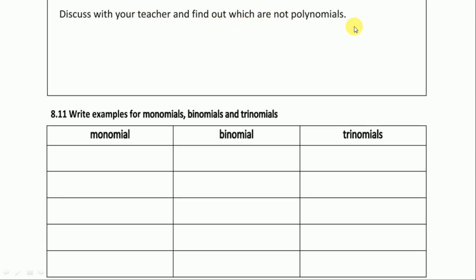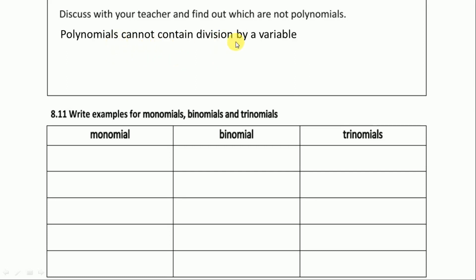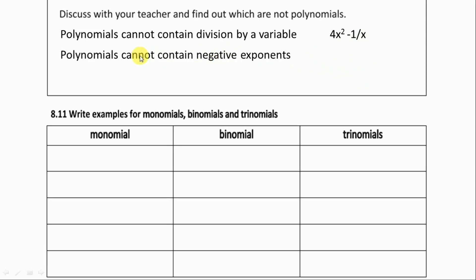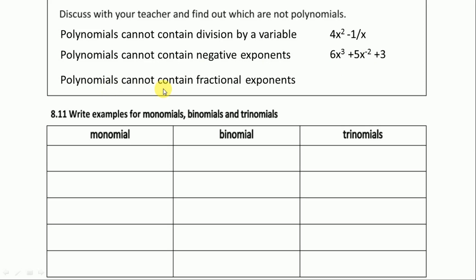Let's move to the next one — discuss with your teachers and find out which are not polynomials. Some rules: first, polynomials cannot contain division by a variable. Next, polynomials cannot contain a negative exponent — if the power of the variable is minus, it is not a polynomial. Polynomials also cannot contain a fractional exponent — if the power of x is 1 by 3, that is also not a polynomial.